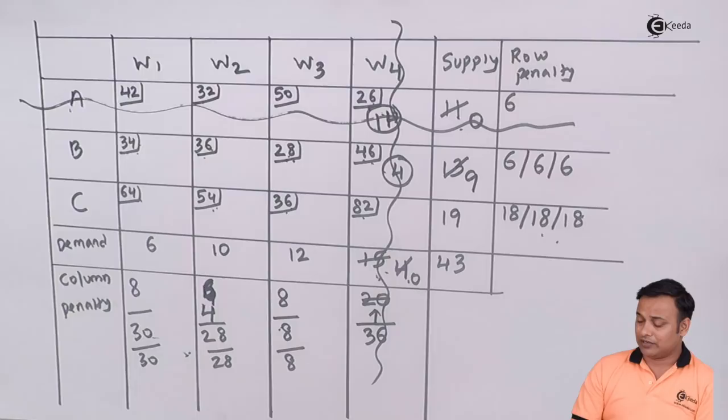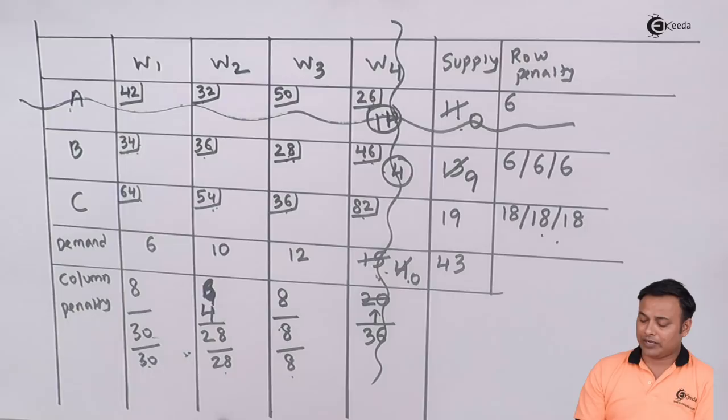Because I have cancelled the column, my column penalties will remain same. Now I will change my row penalties by doing the recalculation. In the second row we have 28 and 34, so the difference shall be 6. In the third row it is 36 and 54, the difference shall be 18. Now the highest penalty in the third cycle is 6, 18, 30, 28, 8.